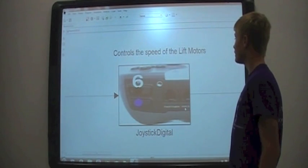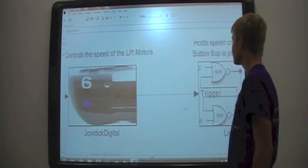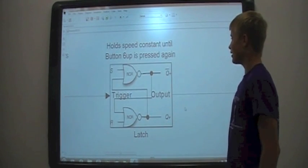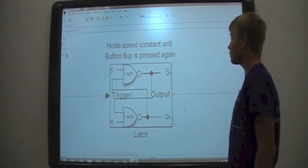This block right here controls the speeds of the lift motors. This is the latch block. This block holds a constant speed until button 6 up is pressed.